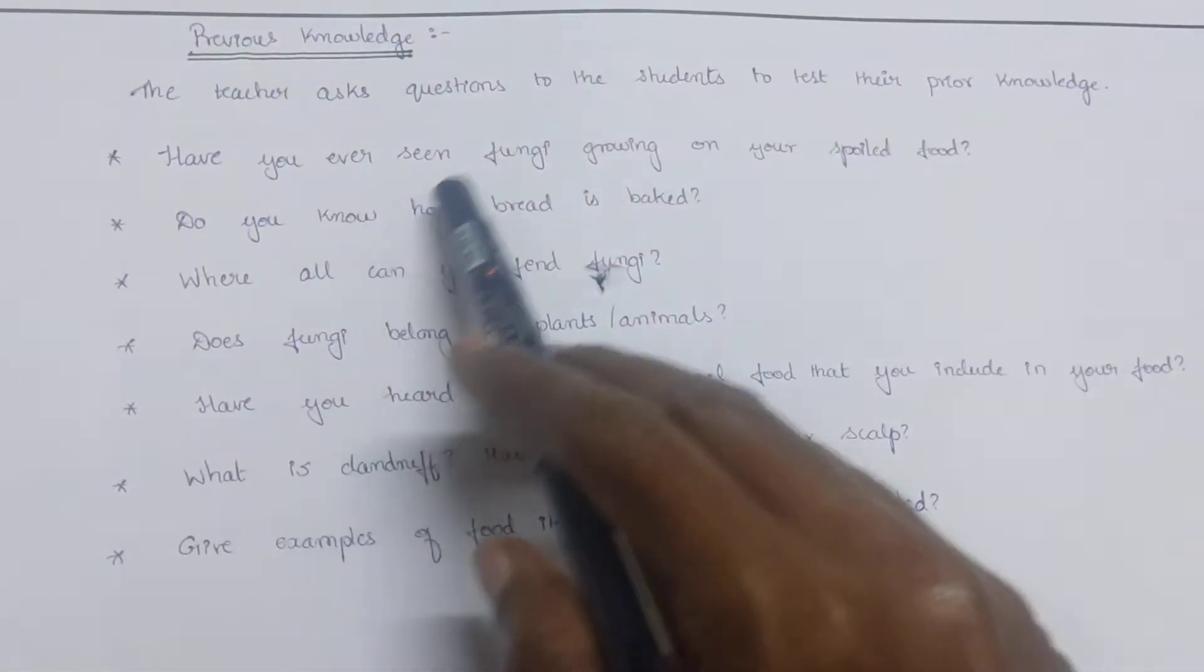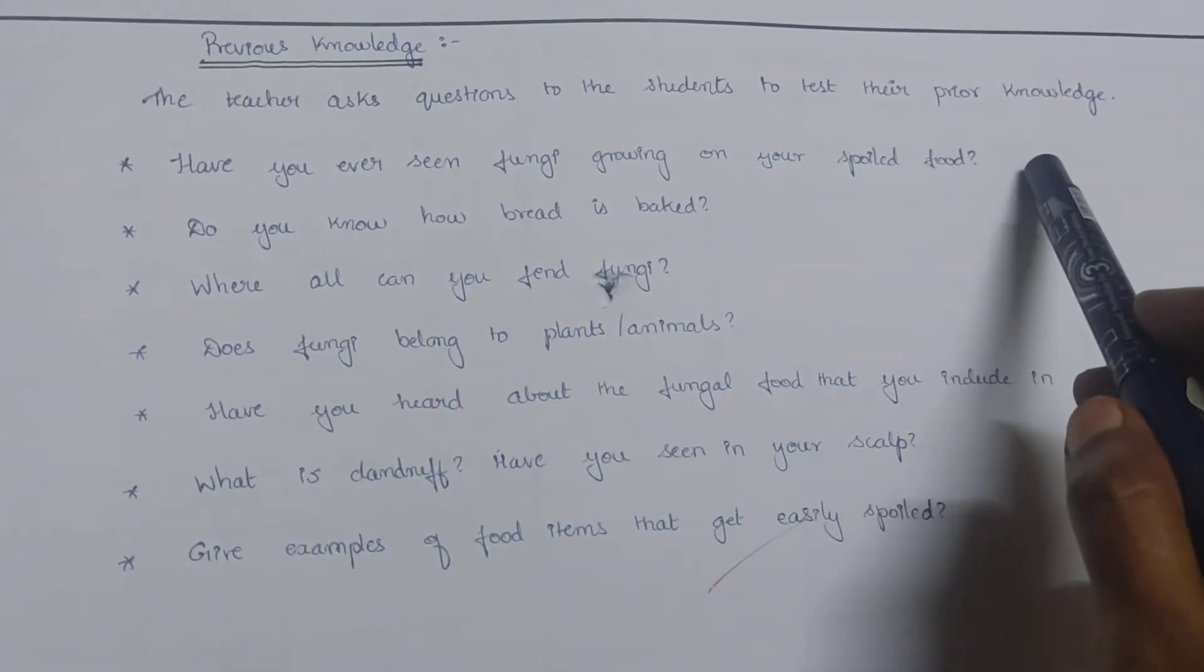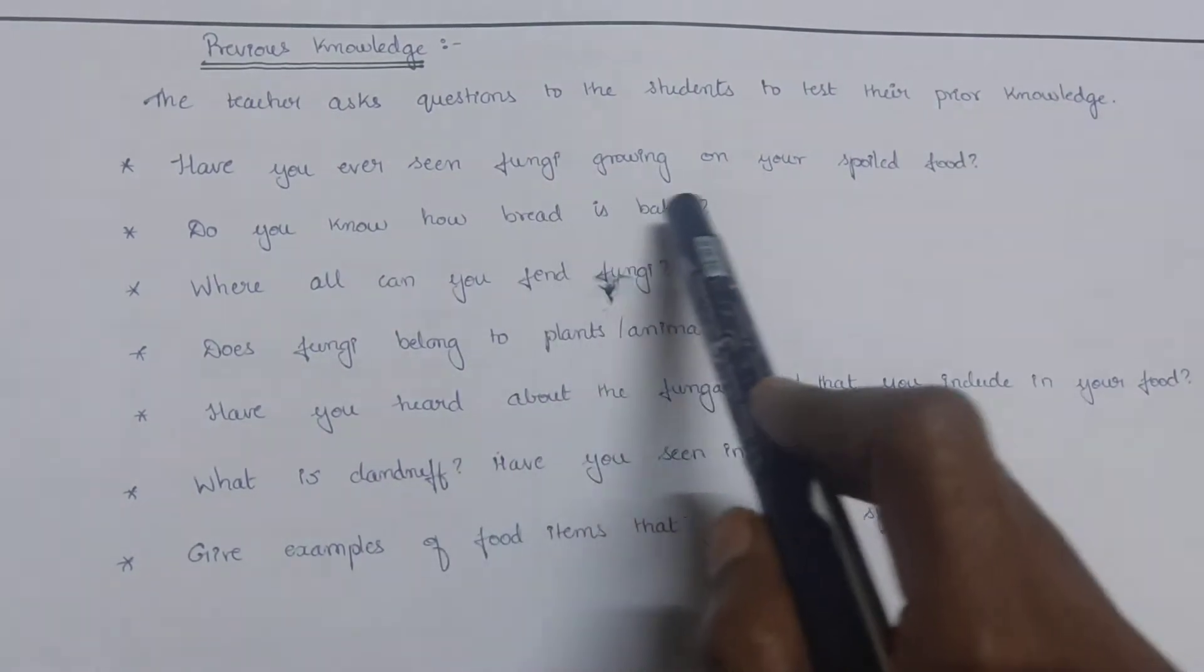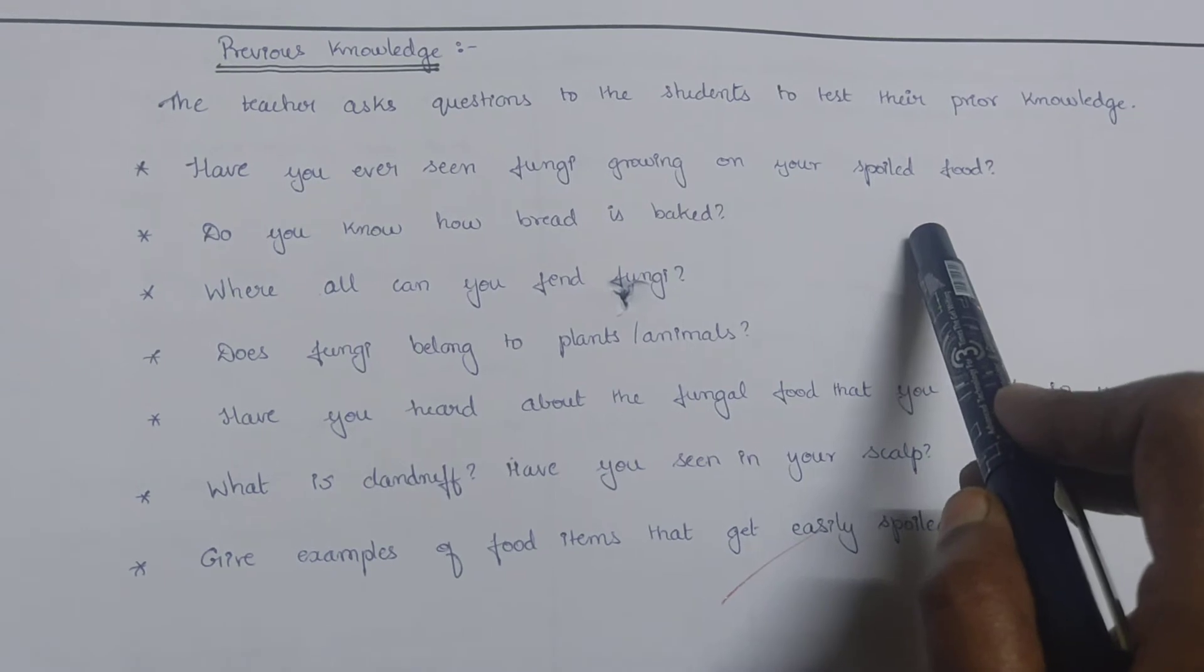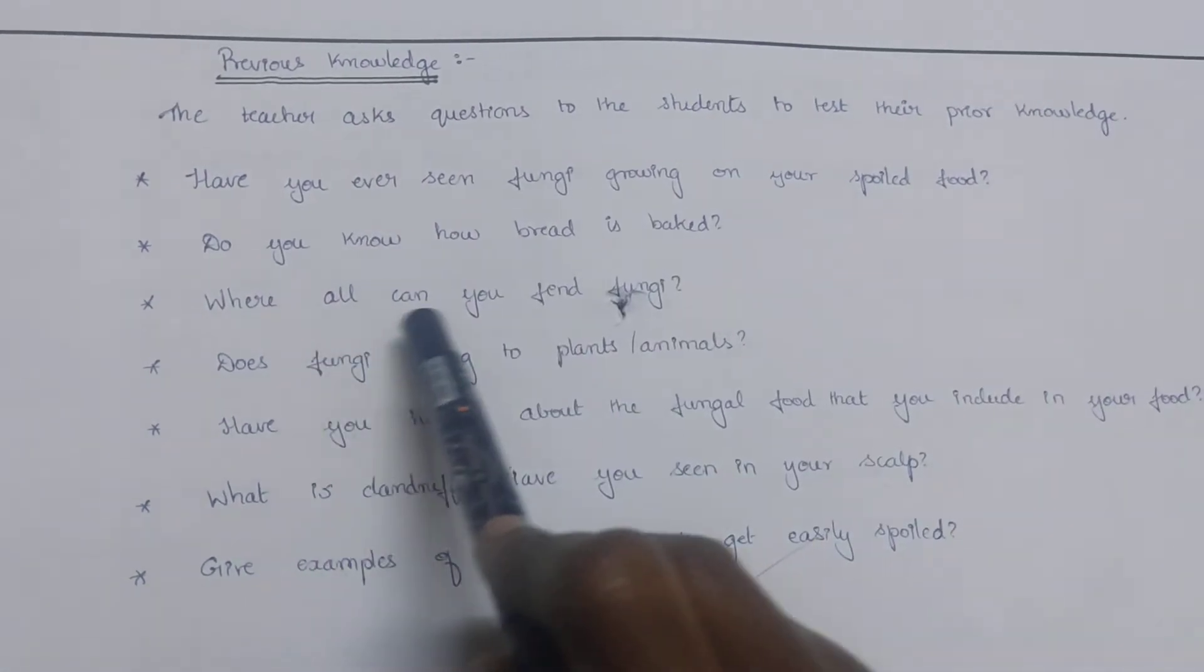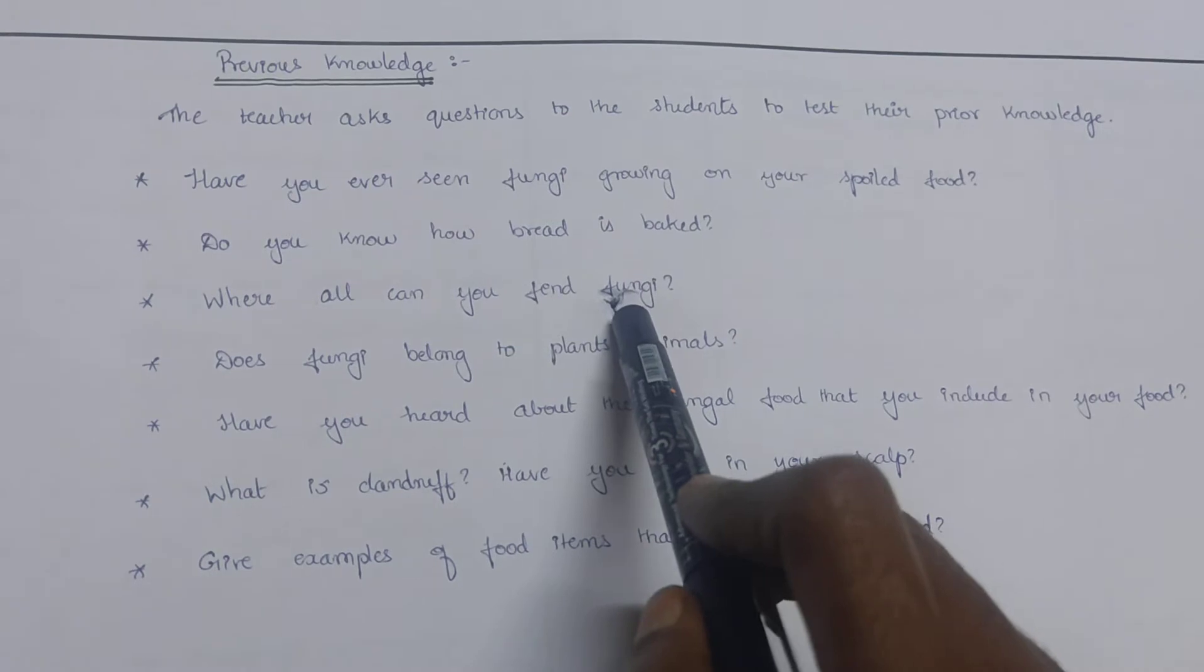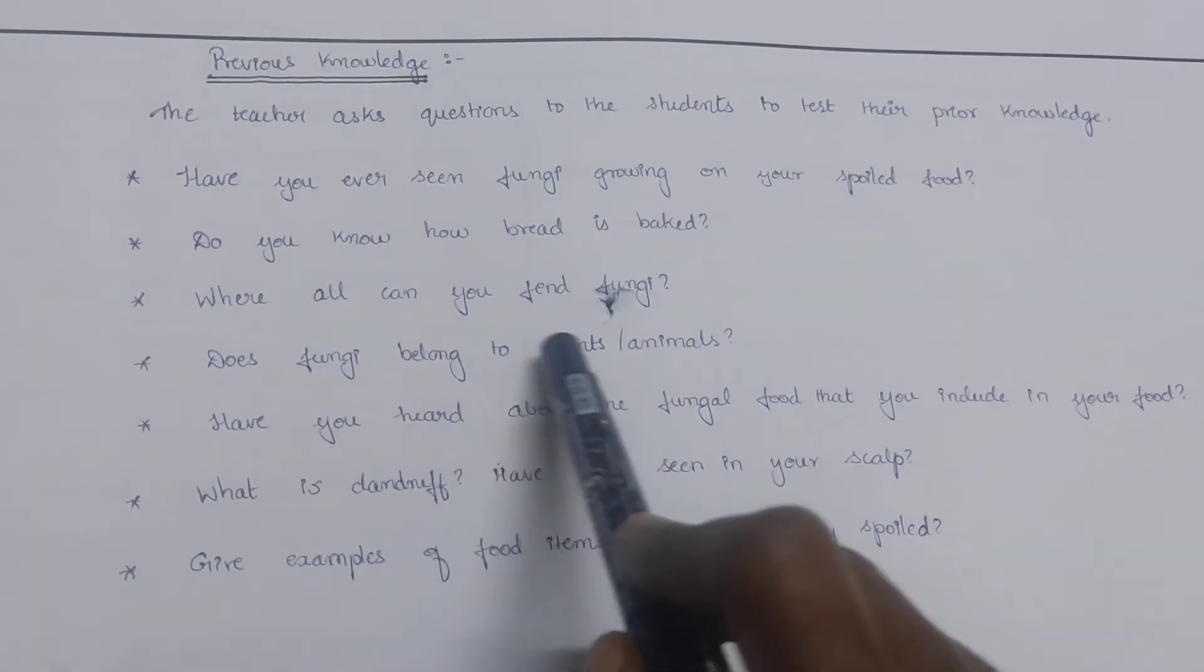Previous knowledge: the teacher asks questions to the students to test their prior knowledge. Have you ever seen fungi growing on your spoiled food? Do you know how bread is baked? Where all can you find fungi? Does fungi belong to plants or animals?